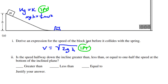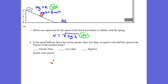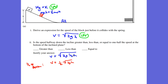Letter A2 — they want to know: is the speed when the box is halfway down the incline greater than, less than, or equal to one-half of the speed at the bottom of the incline? We know at the bottom the velocity equals root 2GH, so one-half of that is our equation for half at the bottom. Our other equation is velocity equals root of 2G times one-half H, and that is halfway down.